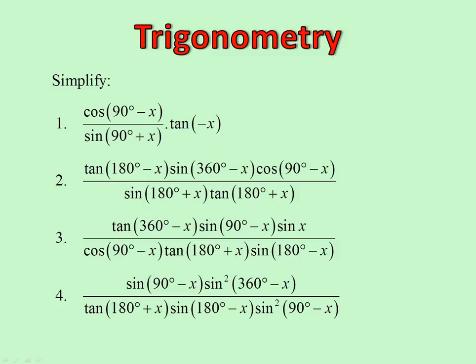Here are a whole lot more to try. Cos(90 minus x) becomes sin x. That becomes plus cos x. Fourth quadrant, negative tan x, giving negative 1. These ones you can try yourself.